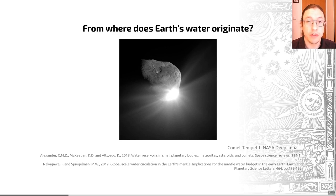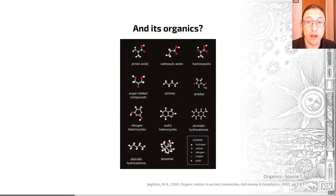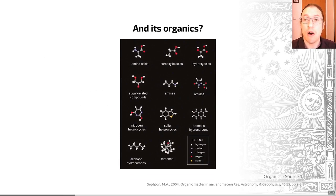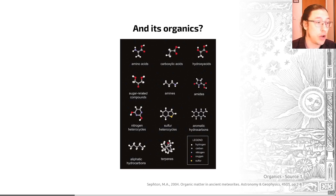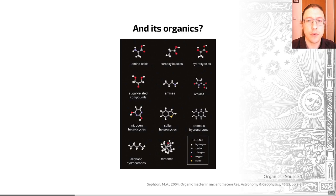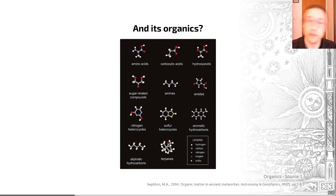The other thing that all life as we know it relies upon is organic compounds. Organic compounds are those compounds that contain carbon-hydrogen bonds, some of which are shown on this slide here. All cells rely on organic compounds, so where on early Earth did these organics come from? I'll give you two possible sources.